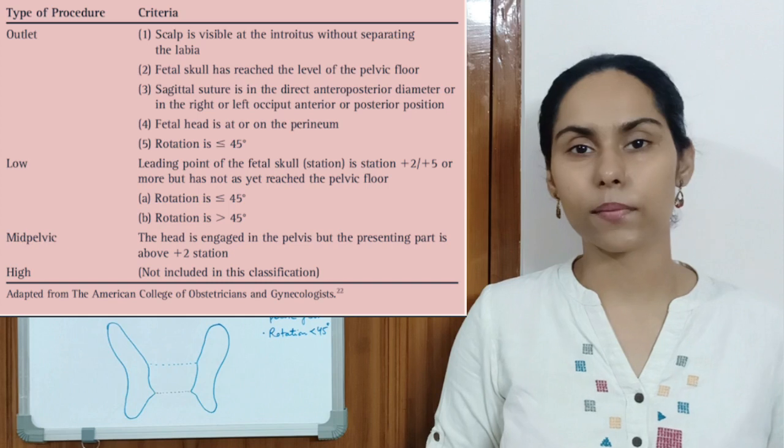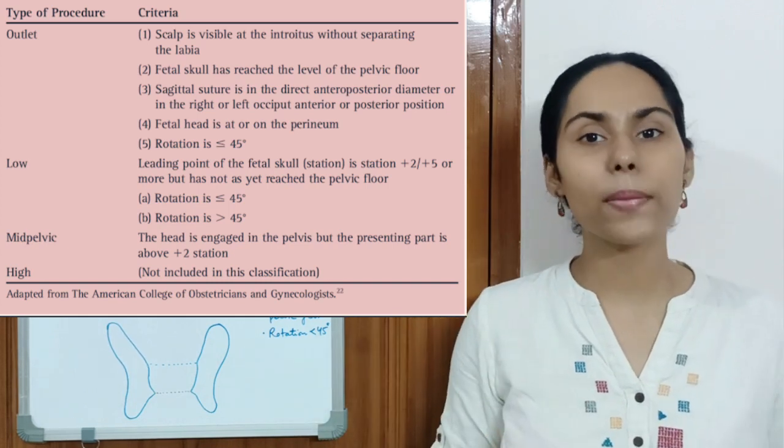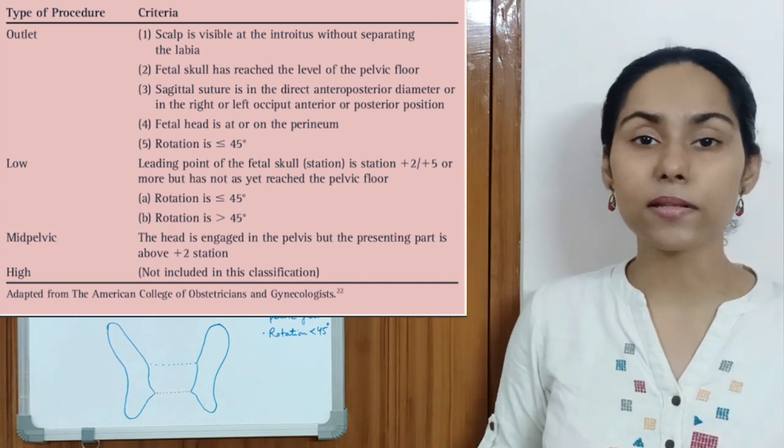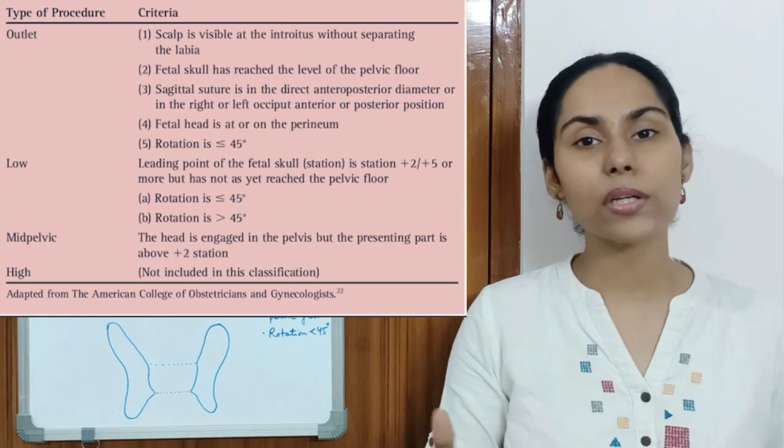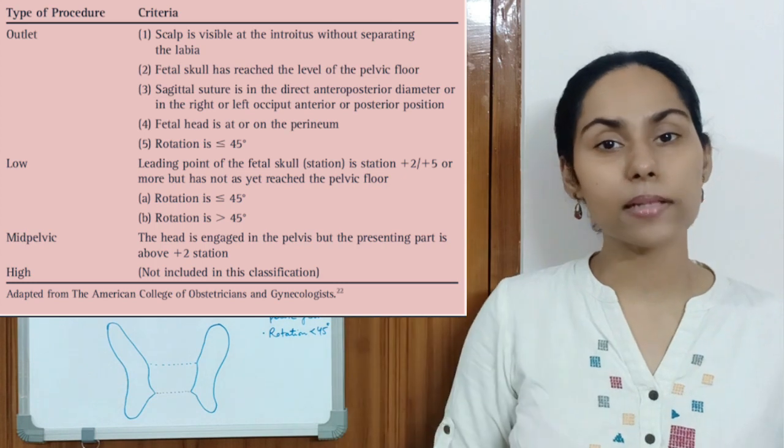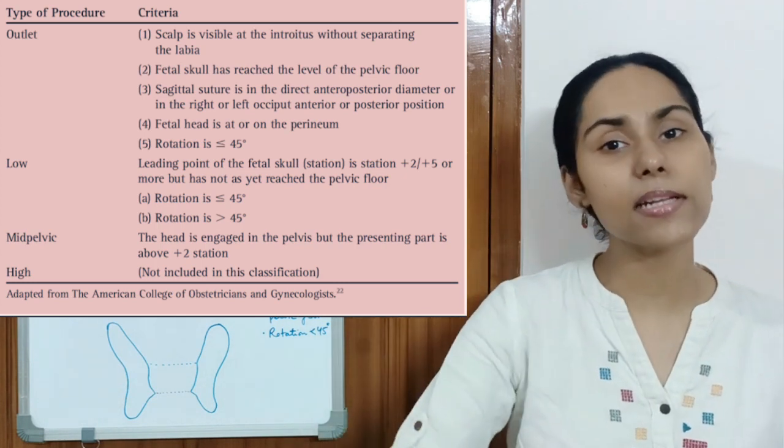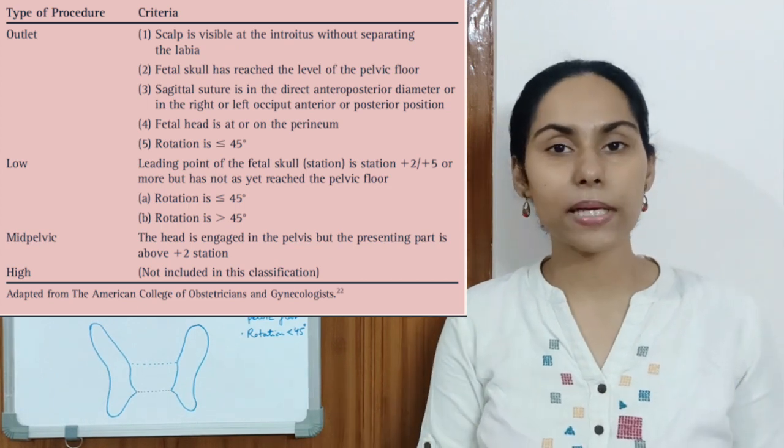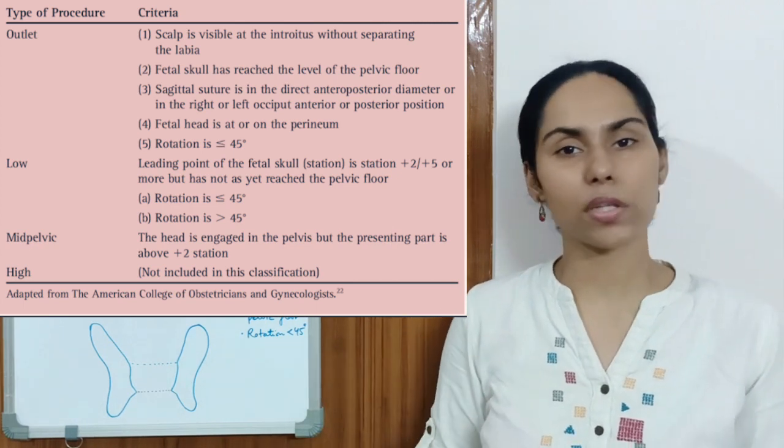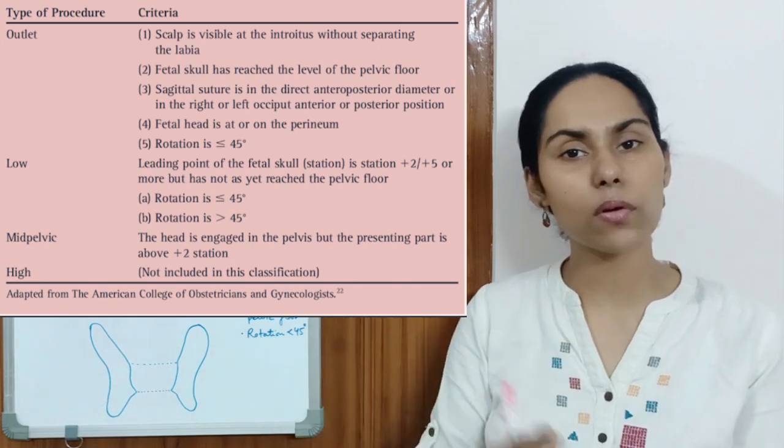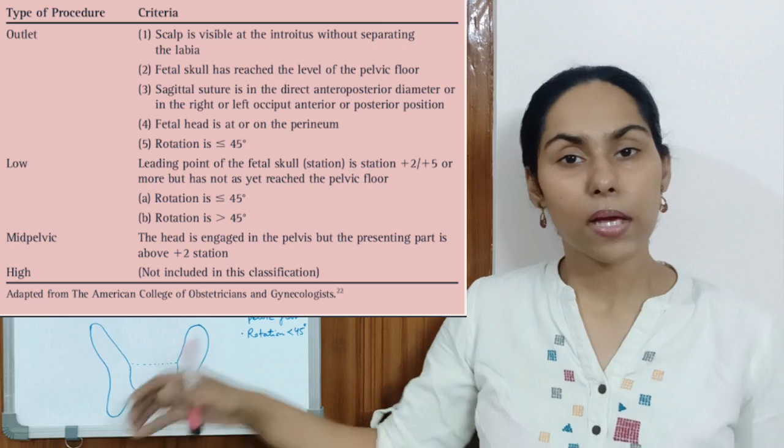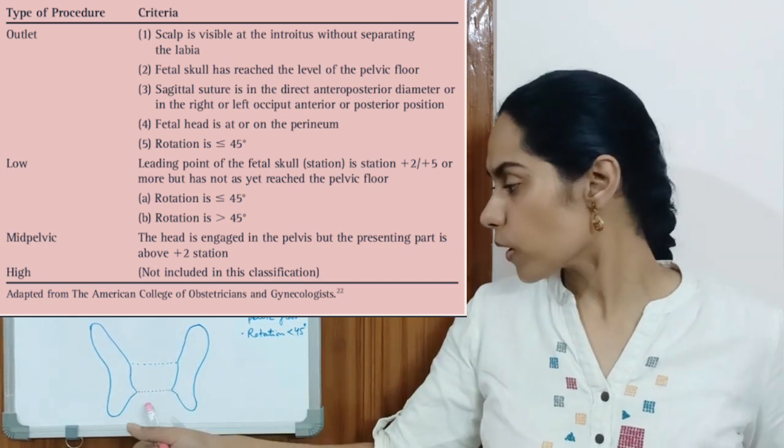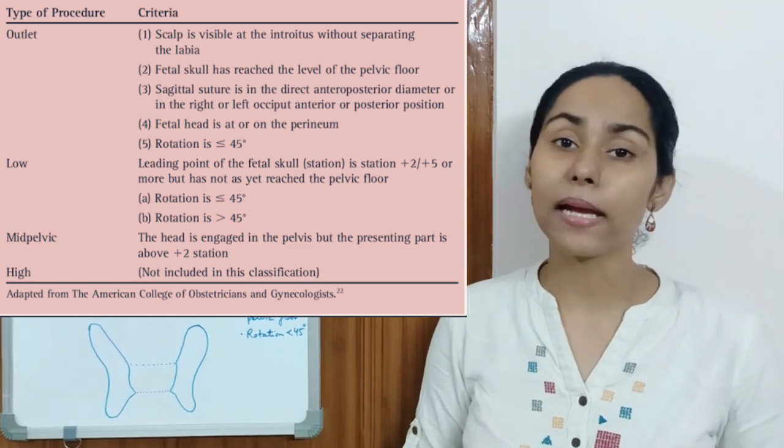So now let's talk about mid forceps, low, and outlet. The mid forceps are applied when the head is engaged but the station of the head is above plus two. So what are these stations? The station basically means the distance of the fetal head from the ischial spine. If it is present above the ischial spine then we consider the negative station. And as the head descends below the level of the ischial spine we consider the positive station. So in mid forceps, we have the application somewhere between when the head gets engaged and till the level of plus two station. Head gets engaged when it crosses the pelvic brim. Next we have the ischial spines—the level at which ischial spines are is station zero. And below that is plus two station. So somewhere between engagement and plus two station is where we can apply our mid forceps.